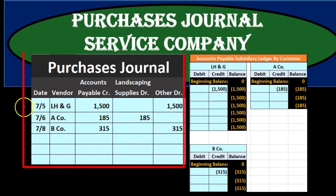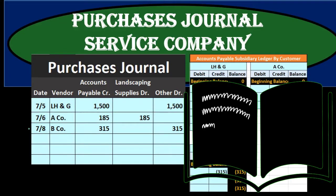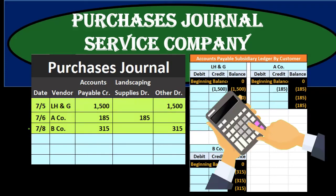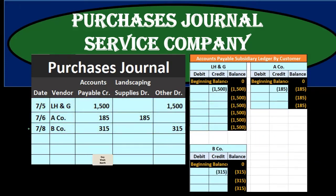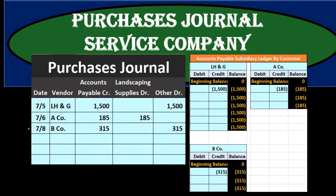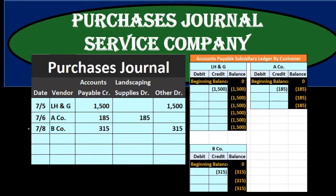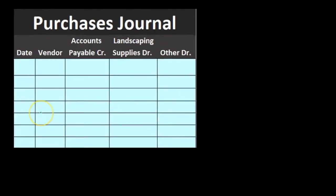With the purchases journal, we record transactions during the month into the journal rather than making a separate journal entry for each transaction, which makes the process quicker. We then sum these up at the end of the time period — in our case, the month — and record that as a normal general journal entry.